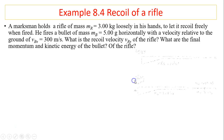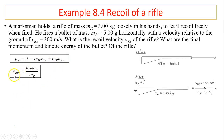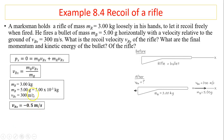First, draw a diagram of the situation. Momentum before is zero, and momentum after is also zero — that's the principle of conservation of momentum. So Px equals zero equals the bullet's momentum plus the rifle's momentum. Rearranging the equation and substituting the given values, you get a recoil velocity of negative 0.5 meters per second for the rifle. This is negative because the rifle recoils backward. Its speed is much smaller than the bullet's speed because the rifle has a much bigger mass than the bullet.